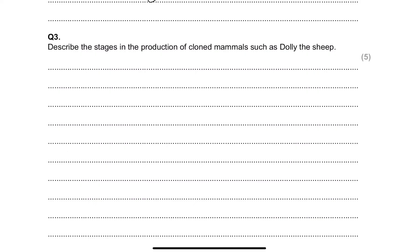Question two: 'Describe the stages in the production of cloned mammals such as Dolly the sheep.' This process is purely theory — no application needed, just memorization. But many students get confused because there are many steps and one mistake can lead to a very wrong answer. This process of cloning is known as somatic cell nuclear transfer.